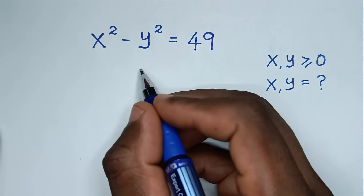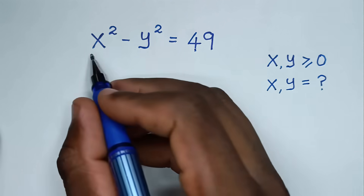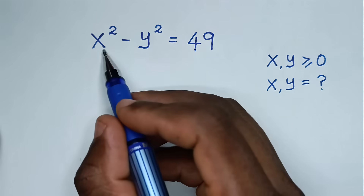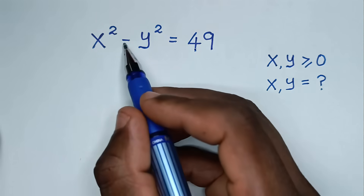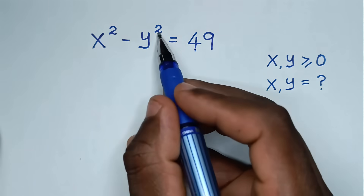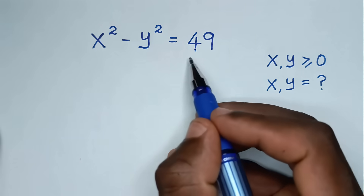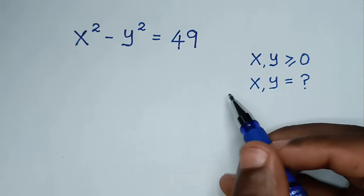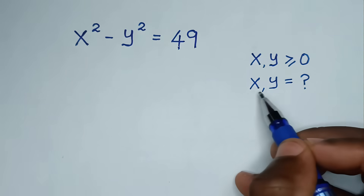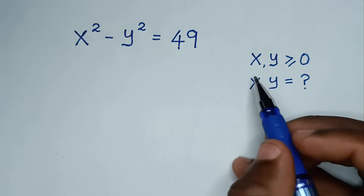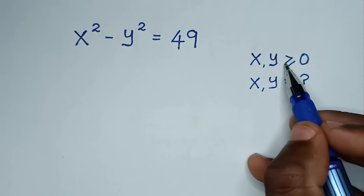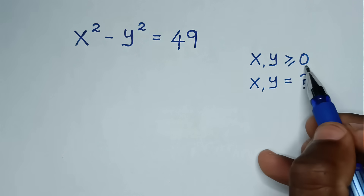Hello, you are welcome to solve this math problem, which is x squared minus y squared is equal to 49. To find the values of x and y such that x and y are greater than or equal to 0.